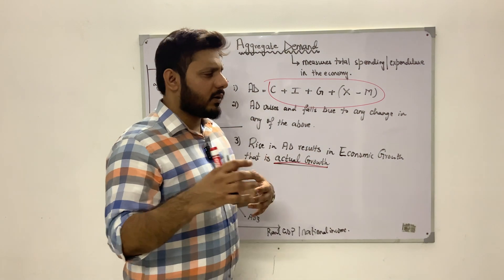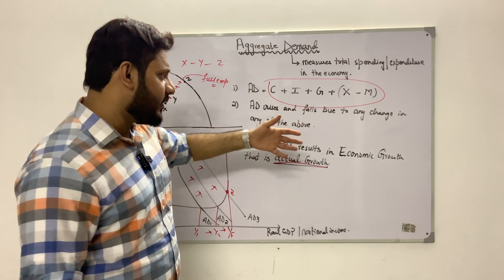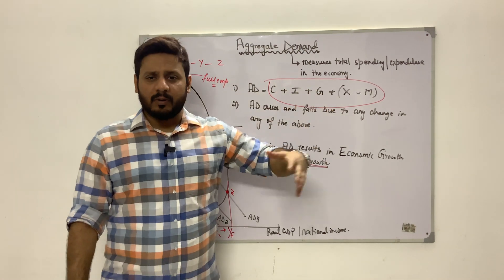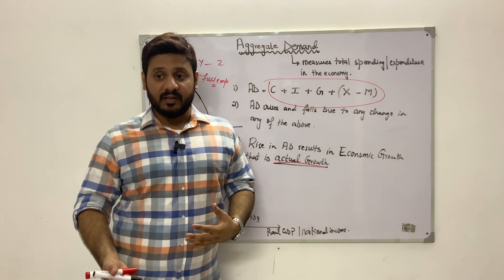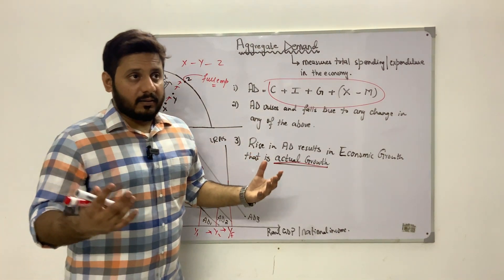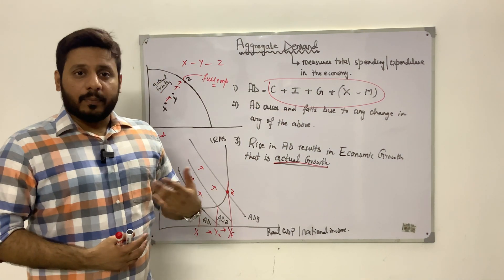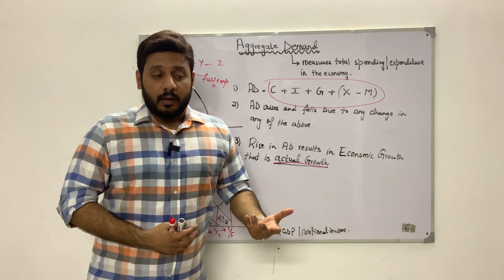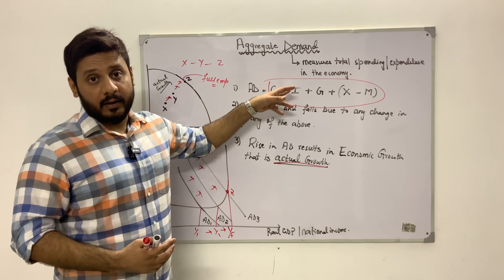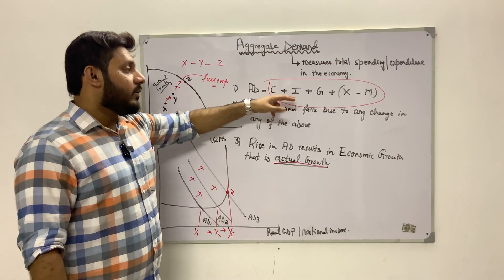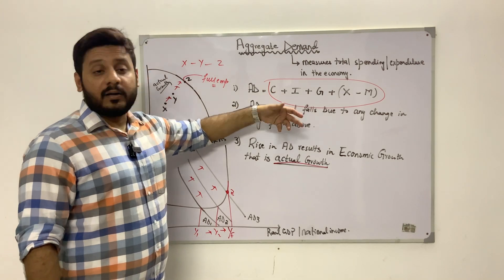As a brief overview of the components — I'll cover them in detail in another video — consumer spending refers to total spending by consumers, which may rise because of an increase in incomes or average incomes per head, or because consumers are optimistic about the future and feel their jobs are secure, so they spend more money rather than saving it.